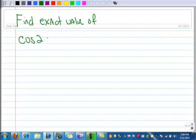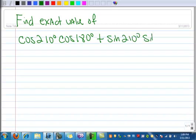All right, this is a little bit like working backwards. We want to find the exact value of, and here we have something that looks pretty monstrous: cos 210° cos 180° + sin 210° sin 180°.